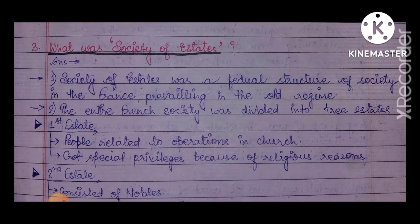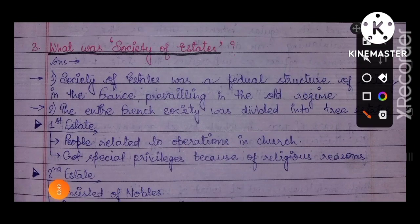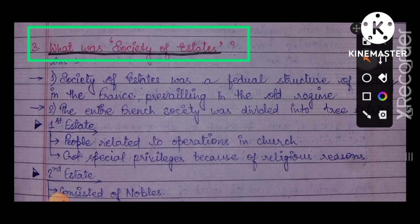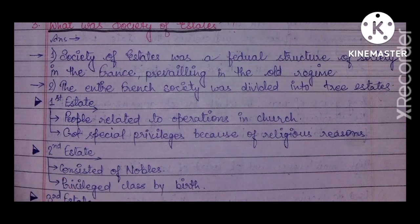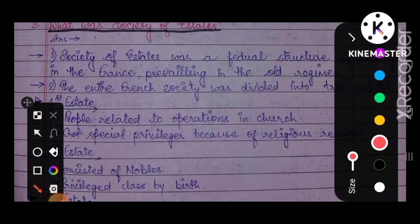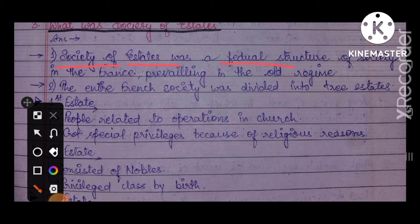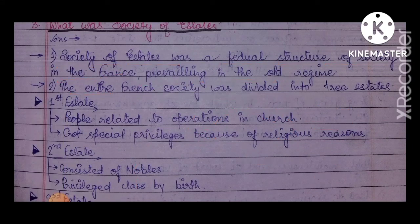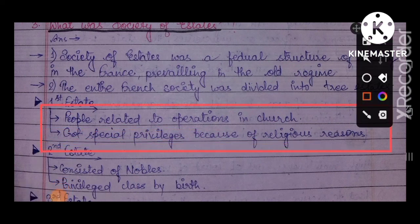Now a descriptive question: what was the Society of Estates? The Society of Estates was a feudal structure of society in France, prevailing under the Old Regime. The entire society was divided into three estates. The first state consisted of people related to operations in the church, who got special privileges because of their religious roles.